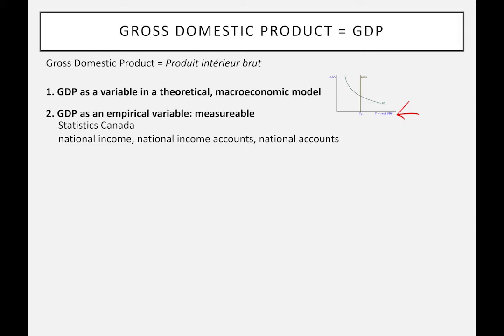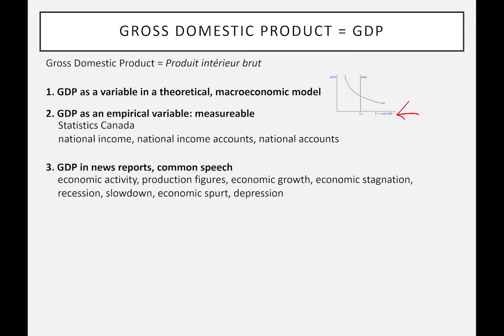So GDP is measurable. In Canada, Statistics Canada is the organization in Ottawa that does the calculation. All countries in the world make an effort at calculating it, though in slightly different ways — the generic term for this is national income accounts or the national accounts. In addition, GDP has taken on a life of its own and is commonly referred to in news reports and common speech, where people refer to things like economic activity, production figures, and recession. It's a bit of a problem because it's best to keep its original intent as part of a theoretical macroeconomic model.